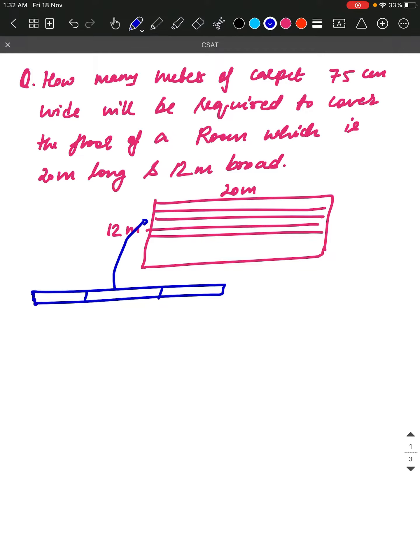The width is 75 cm, but I don't know the length. We will use a rectangle formula - the area of carpet should be equal to the area of the room. So, area of carpet equals area of room.